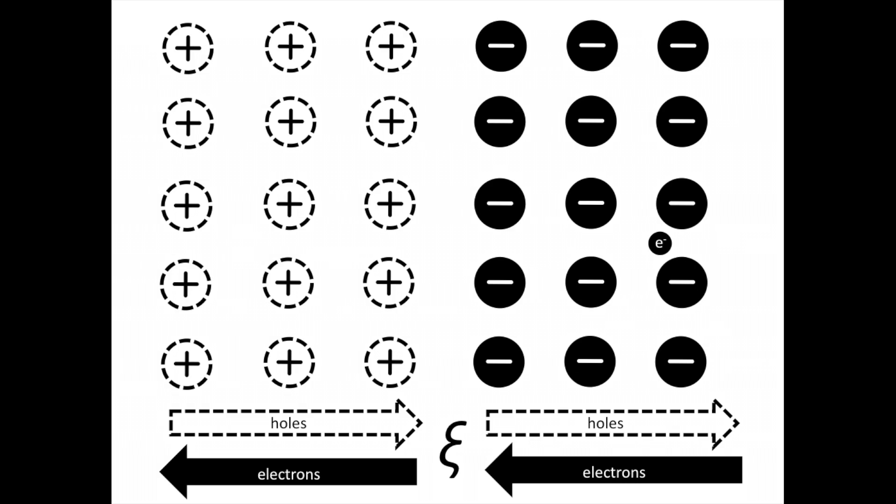If you were to insert a negatively charged particle, such as an electron, into this field, it would move toward the positive charges. Alternatively, if you put a positively charged particle, it would move toward the negative charges.